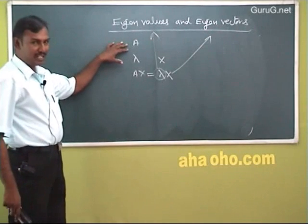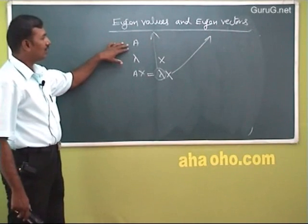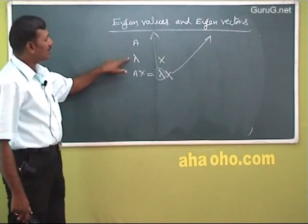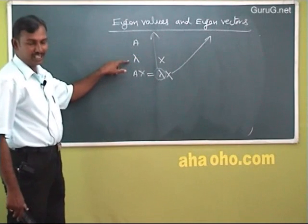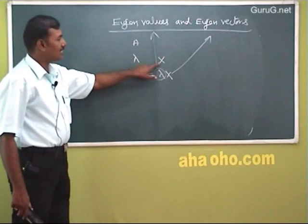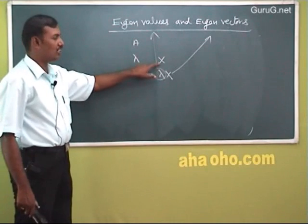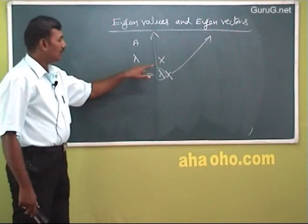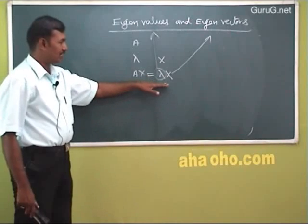Suppose A is a square matrix of any order and if there exists a scalar — scalar means a constant or a number — and x is a column vector or column matrix, such that Ax equals lambda x.